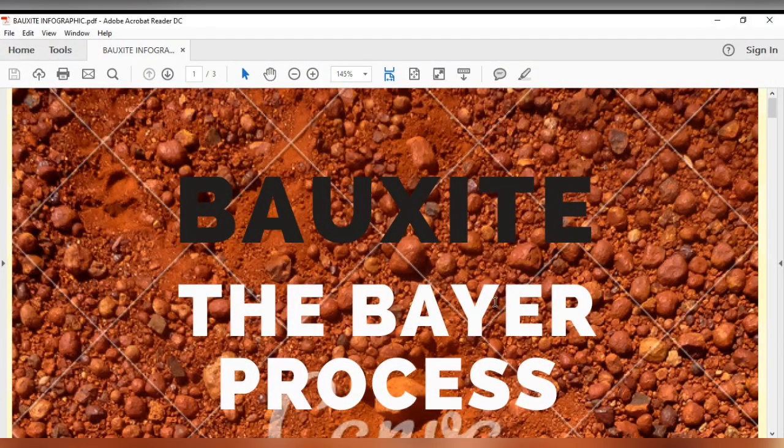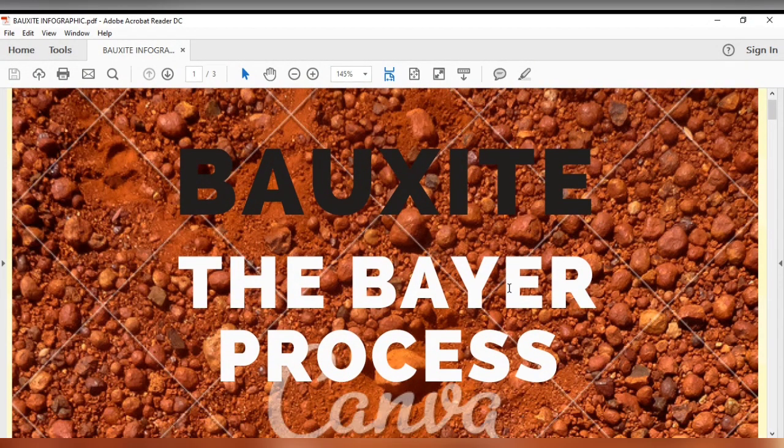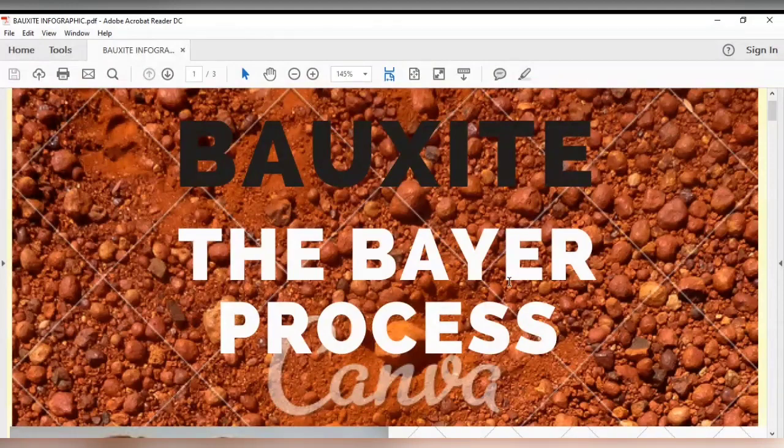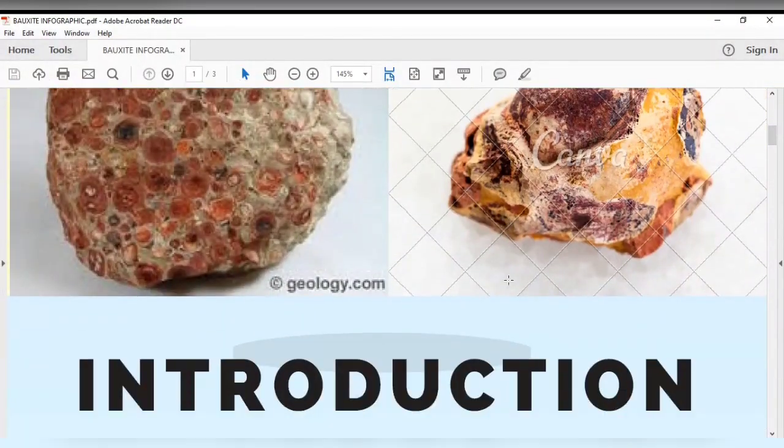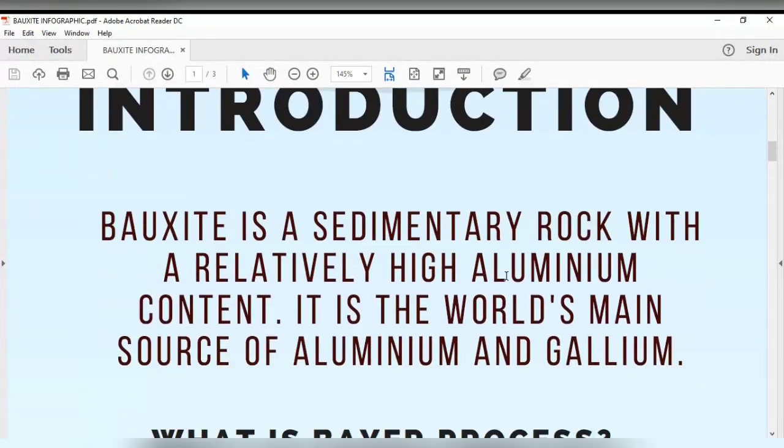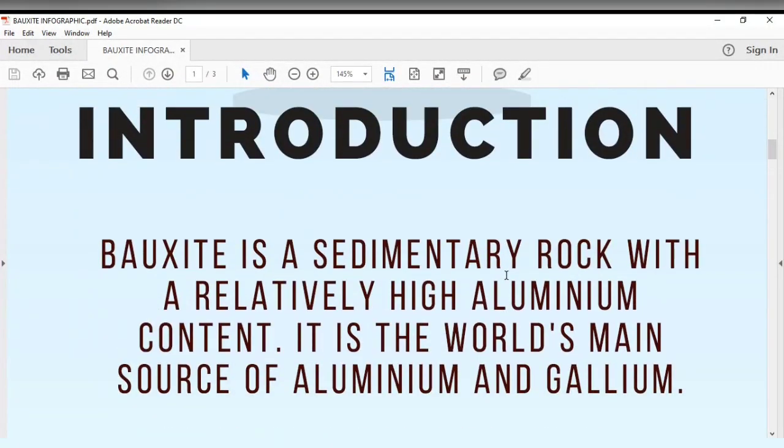My name is Haikal and I would like to give the introduction of my group topic, which is bauxite and the Bayer process. So we can see this example of bauxite. I will introduce what is the definition of bauxite.